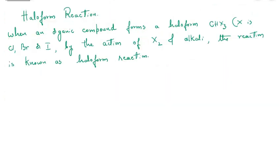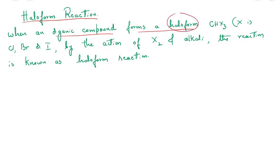Now the next part is the haloform reaction. When an organic compound forms a haloform (CHX3) — if X is Cl it is chloroform, if X is Br it is bromoform, and if X is I it is iodoform — by the action of halogen and alkali, the reaction is called the haloform reaction.